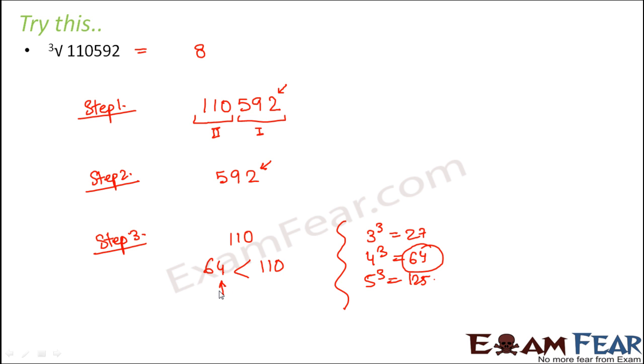Now let us focus on the units digit of 64. That is 4. Therefore 4 would be the tens digit here. So 48 would be the cube root of 110592.